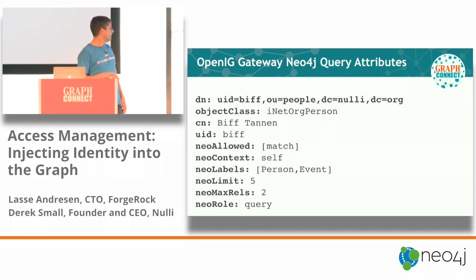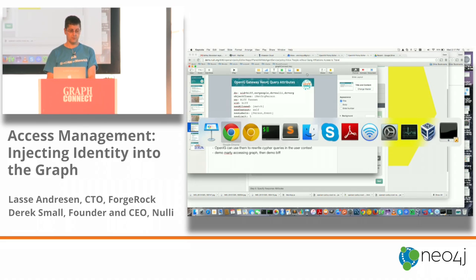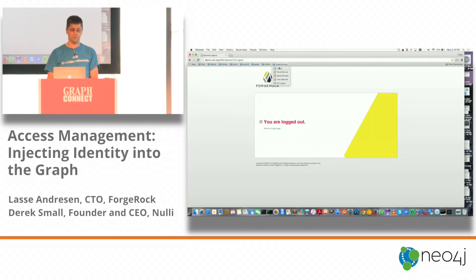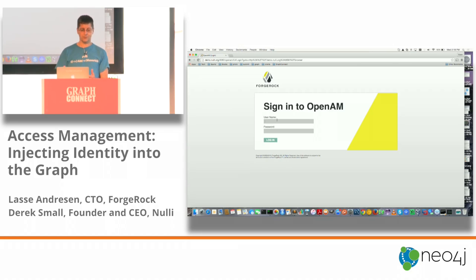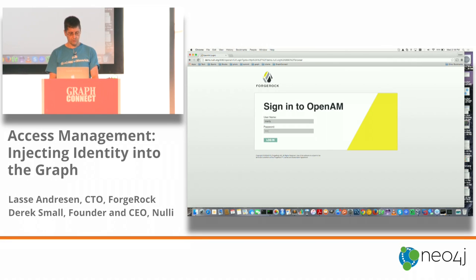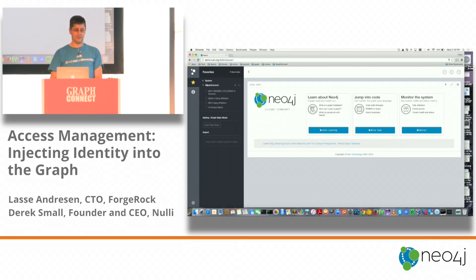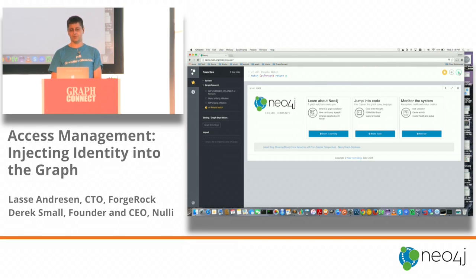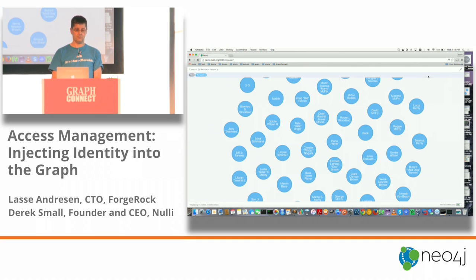Let's see what this looks like. I'm going to select the Neo4j browser — but instead of getting the browser directly, I get shunted to a login page because the agent doesn't see an authenticated identity. Now I'm logging in as Marty, who has no restrictions. I'm going to run an all-people match — a super simple query returning all the people in the database. We get 54 nodes back.